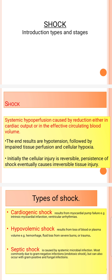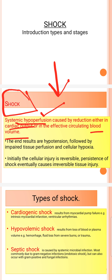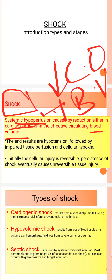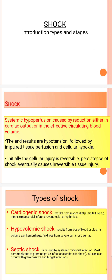Shock is defined as a condition where cardiac output and blood volume is low. There is a decrease in the cardiac output or the blood volume circulating in your vessels. If it is low, what happens is systemic hypoperfusion — we call this shock. The end results of shock are impaired tissue perfusion and cellular hypoxia.